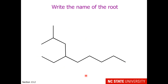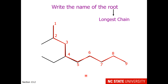Here is a bigger one. First, let's get the root — this would be the longest chain. The part highlighted in red is the longest chain, and it is 9 carbons long. I'm going to number the chain starting at the end closest to the branches. This chain has 9 carbons, so the root is 'non'. It is an alkane, so we're going to call this nonane.